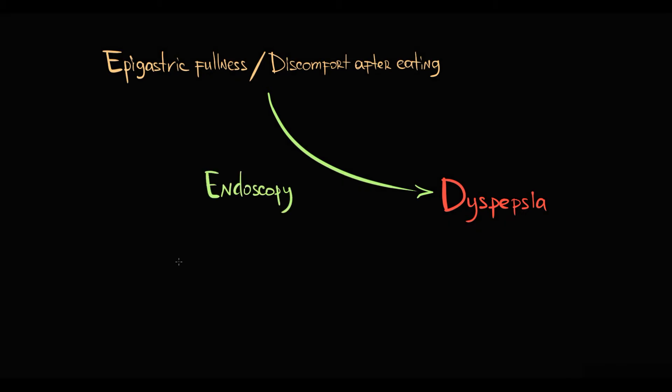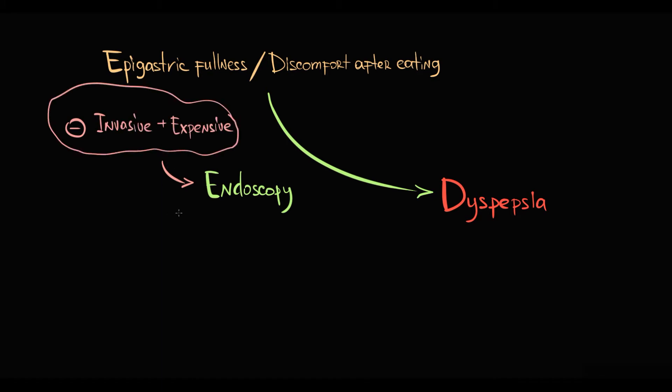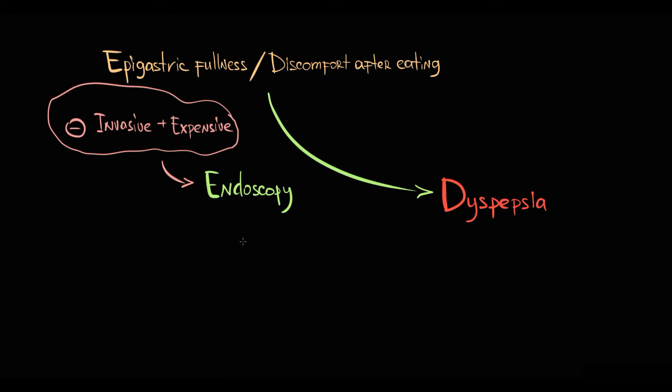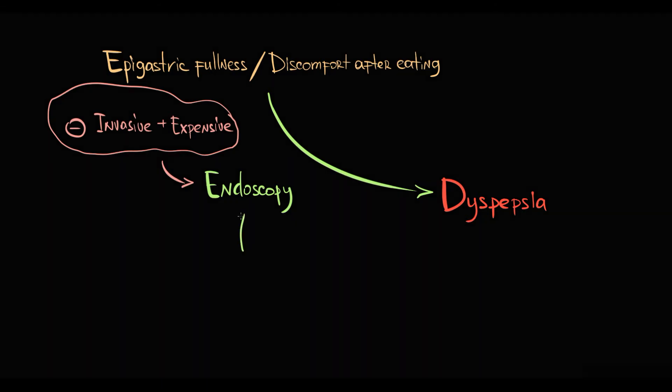The major issue of endoscopy is that it's an invasive and relatively expensive procedure. So imagine if you will refer for an endoscopy every patient with such a common symptom as epigastric fullness. First of all, endoscopies will be very busy, and what is more important, you will have no patience, because the reputation of a sadist will precede you. So to refer for an endoscopy or not was always a challenge, and to solve this problem the list of so-called alarm symptoms was created.